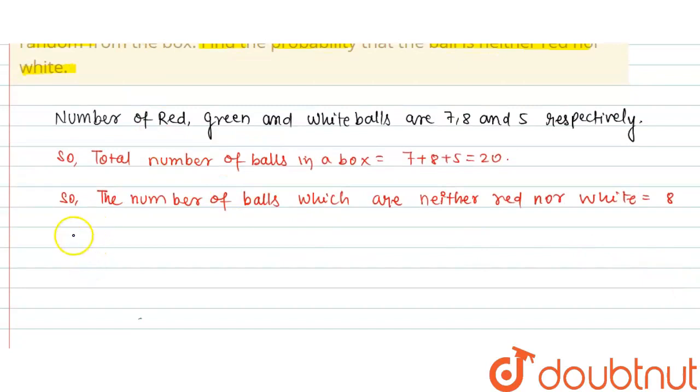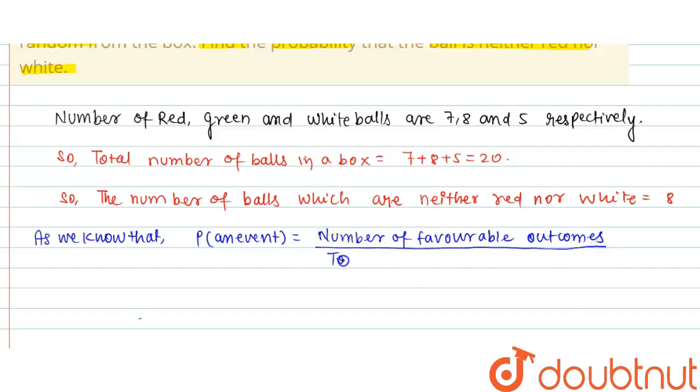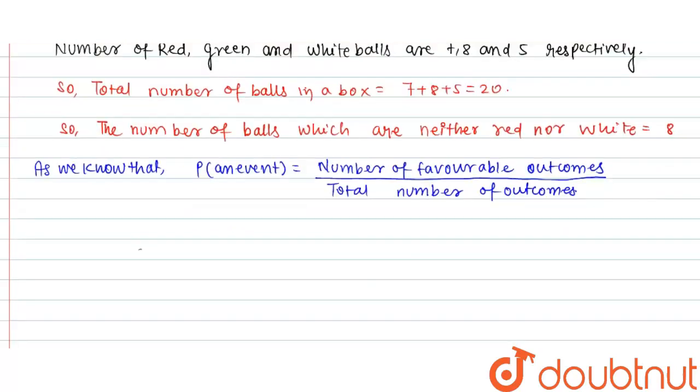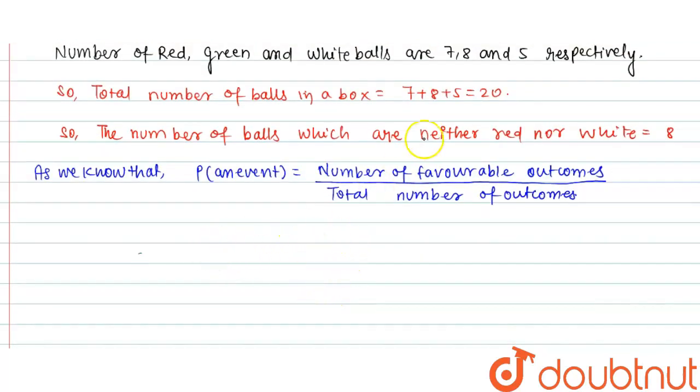We will use the formula of probability. We know that probability of an event is equal to the number of favorable outcomes divided by the total number of outcomes.